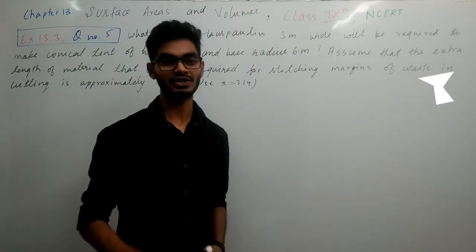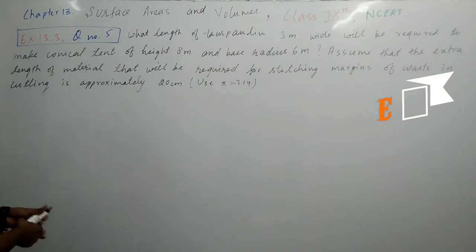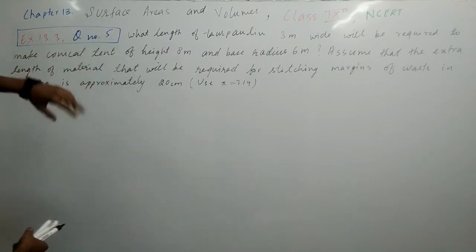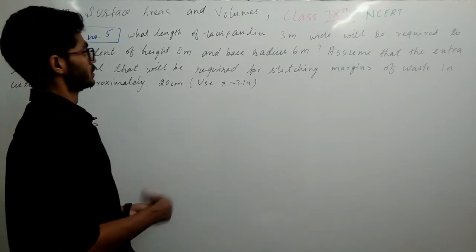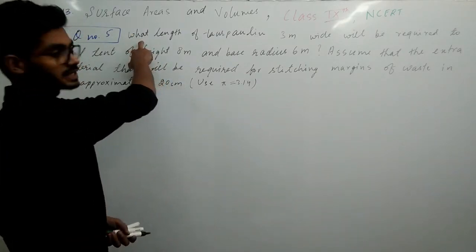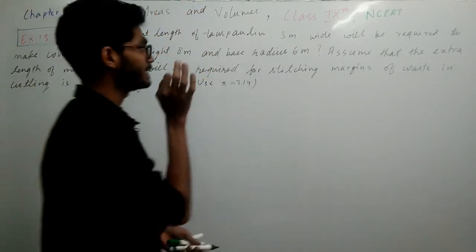Hello students, this is Rajeev and you are watching Aims Academy. So now we are going to discuss the fifth question of Exercise 13.3 which is based on cone. The question is: what length of tarpaulin 3 meter wide will be required to make a conical tent?